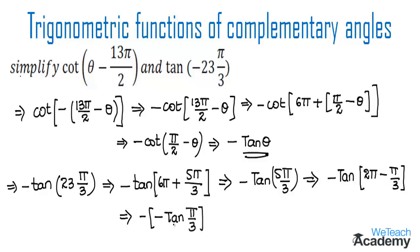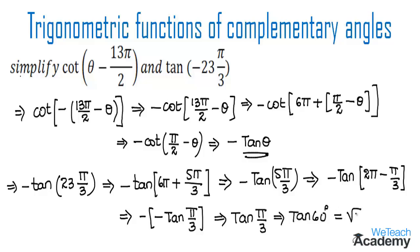Minus into minus becomes plus, so we get tan(π/3) as the result. Here tan(π/3) is nothing but tan(60°), and we already know the value of tan(60°) is √3. So √3 is the value of tan(−23π/3).